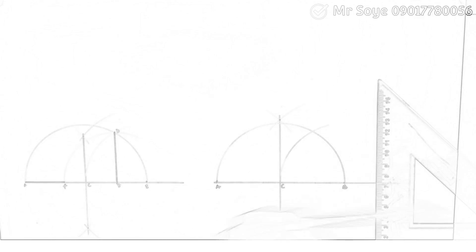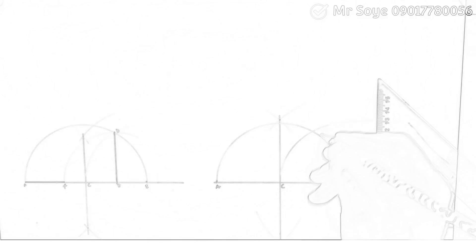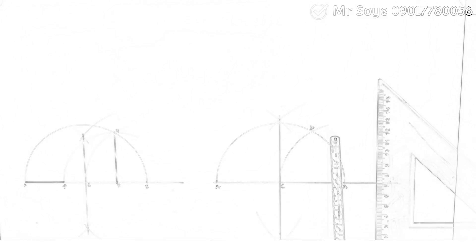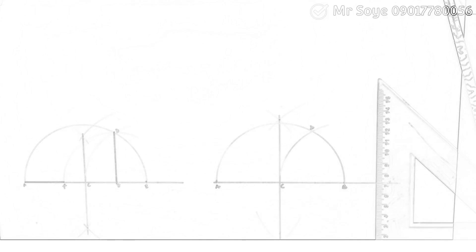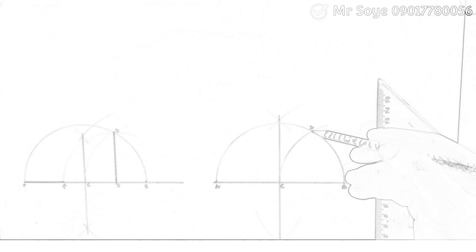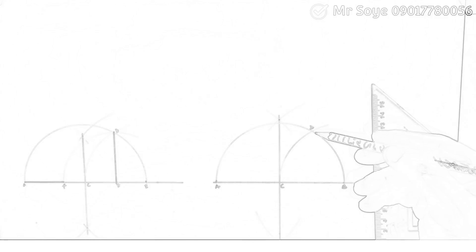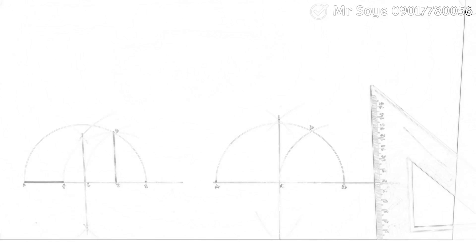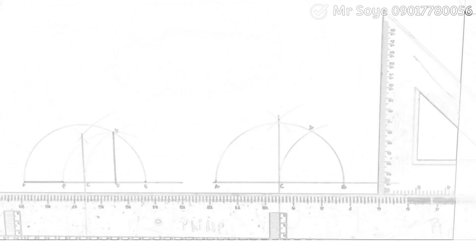Draw a semicircle and label the point at which the arc and the semicircle join together as point D. Then draw a perpendicular from that joint — from D down to line CB — draw a perpendicular, a normal, from that point.